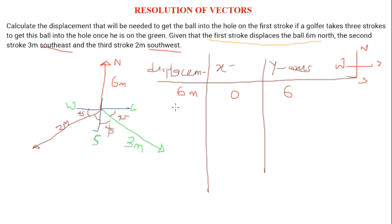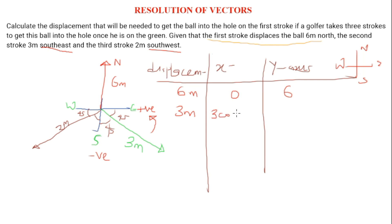Now consider the 3-meter displacement. It has something to do with the y-axis — the negative y-axis — and also the positive x-axis. If we resolve this 3-meter vector to the x-axis, since it's at 45 degrees in the middle, we get 3 cos 45.